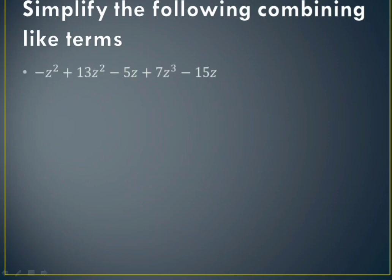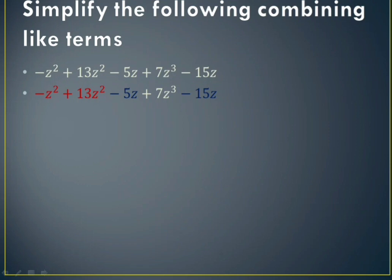Next: simplify the following by combining like terms. Here we have many terms and need to combine only like terms. The z squared terms are like terms, minus 5z and minus 15z are like terms, and z cubed is alone. Taking like terms together: minus z squared and plus 13z squared give 12z squared. Then minus 5z and minus 15z make minus 20z, and 7z cubed is carried down. So the answer is 12z squared minus 20z plus 7z cubed.